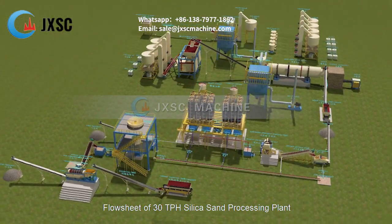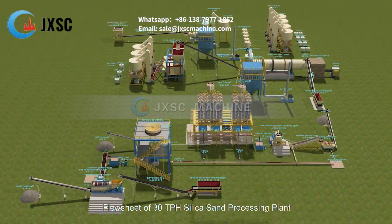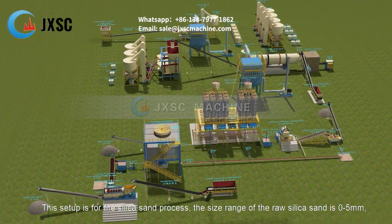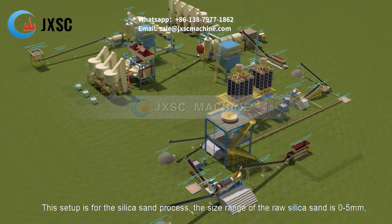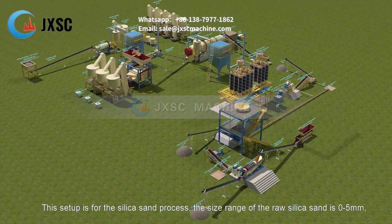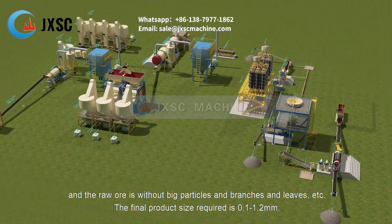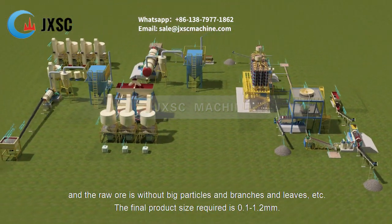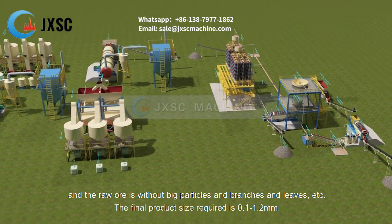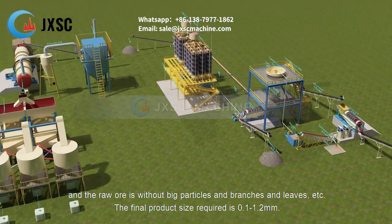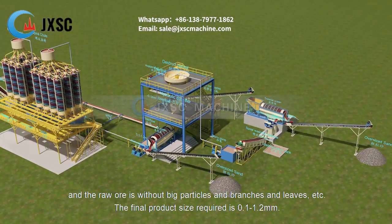Flowsheet of 30 TPH silica sand processing plant. This setup is for the silica sand process. The size range of the raw silica sand is 0 to 5 millimeters, and the raw ore is without big particles and branches and leaves, etc. The final product size required is 0.1 to 1.2 millimeters.